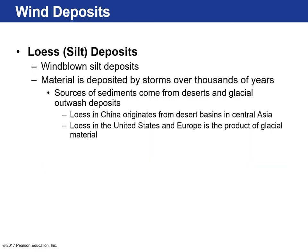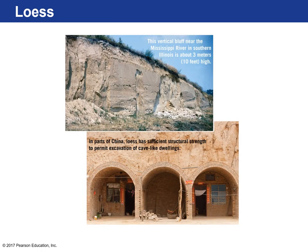Loess deposits are windblown deposits of silt carried up in the air by storms over thousands of years and deposited into an area, and there can be huge accumulations. Loess deposits in China originate from desert regions of central Asia — eons of dry areas with silt carried away by the wind. Loess deposits in the United States and Europe are products of glacial material. Here's an example of an approximately 10-foot-high bluff of loess material near the Mississippi River in Illinois. In China, loess material can be dug out — because it's compacted it has very good structural strength — so you can create cave dwellings within a loess deposit.